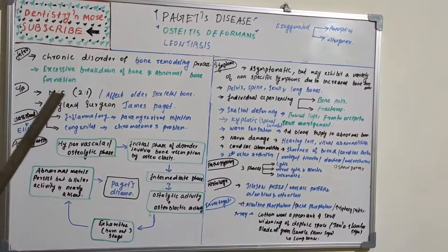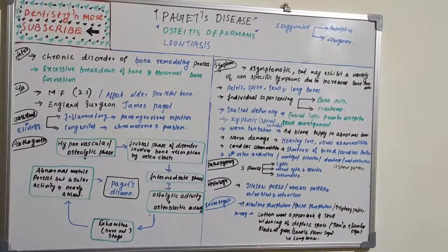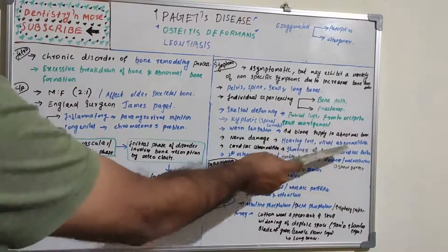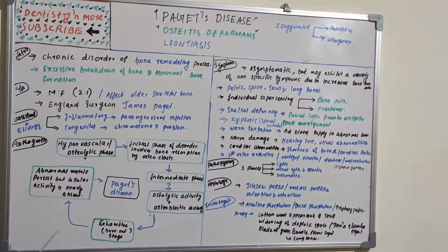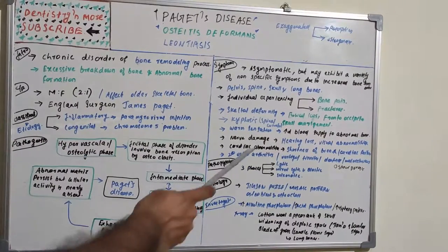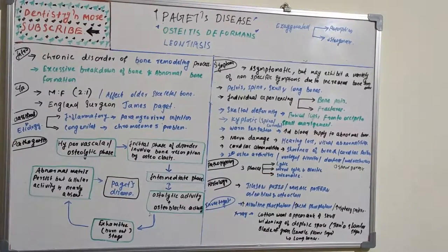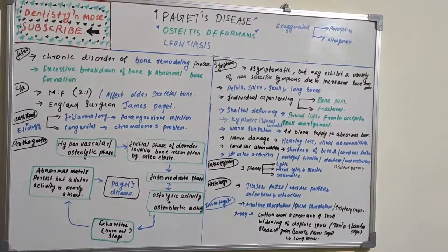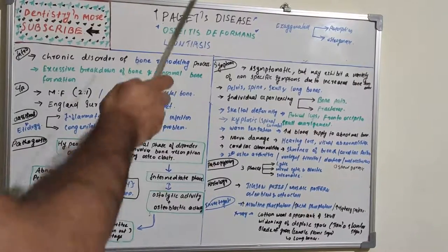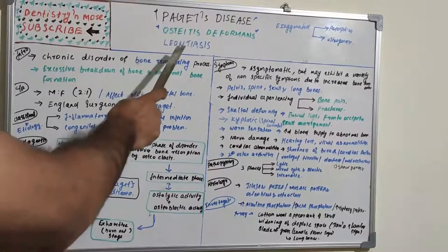There will be a warm sensation due to increased blood supply to the abnormal bone. When abnormal bone formation impinges on nerves, it causes hearing loss or visual abnormalities. Cardiac failure and shortness of breath may also occur. Associated conditions include osteoarthritis, vertigo, tinnitus, deafness, malocclusion, and osteoporosis. When it affects the facial bones, it may give a lion's face appearance, which is where the term Leontiasis comes from.